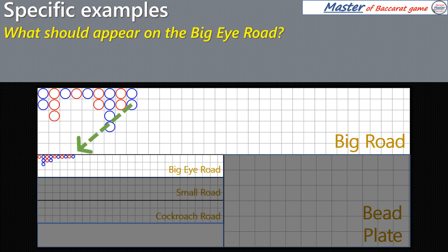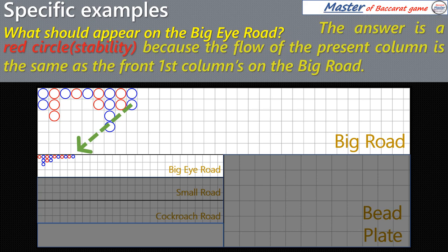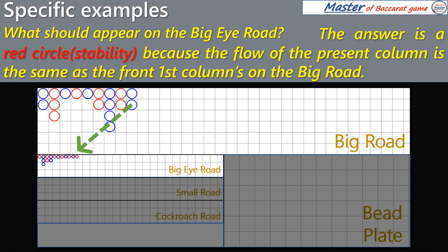What should appear on the Big Eye Road? The answer is a red circle, because the flow of the present column is the same as the front first column's on the Big Road.